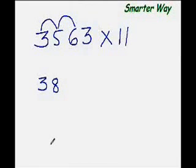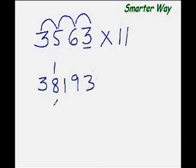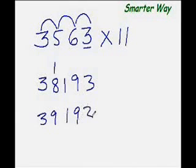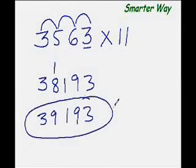So copy the first digit as it is. Next digit would be 3 plus 5, that is 8. Now 5 plus 6 is 11, but 11 is a 2-digit number. Then what do we do? Simple. Just carry forward 1 here, write 1 here. Now 6 plus 3 is 9, and copy this 3 as it is. So the answer would be 38 plus 1 is 39193. This is your answer. See, it works so well.